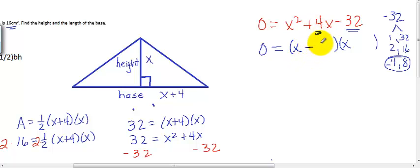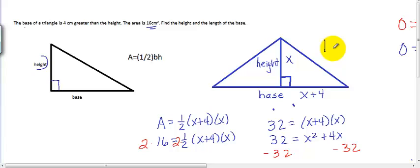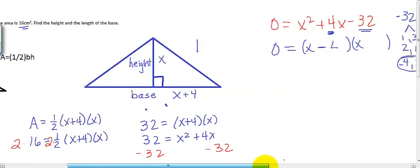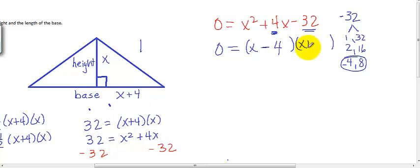I'm going to have one of the binomials be x minus 4, and the other binomial be x plus 8. And then I'm going to check to make sure that the numbers I picked would actually multiply to give me the trinomial x squared plus 4x minus 32.